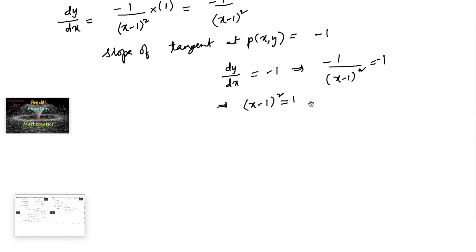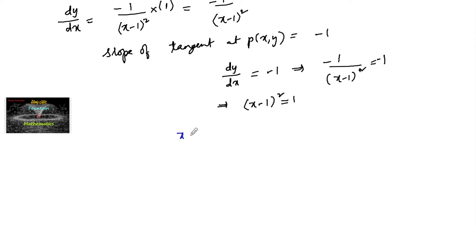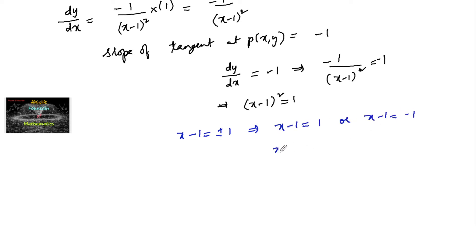We can write (x minus 1) whole square = 1, so x minus 1 is equal to plus or minus 1. That is x minus 1 = +1 or x minus 1 = -1, giving us x = 2 or x = 0.